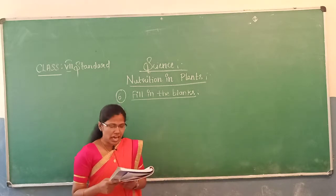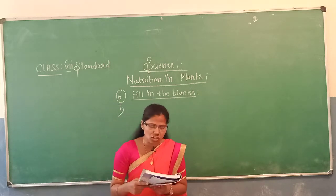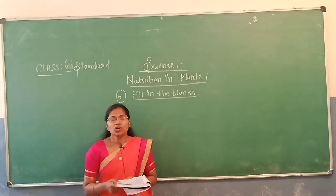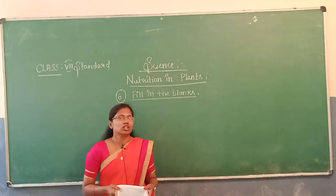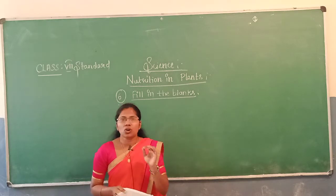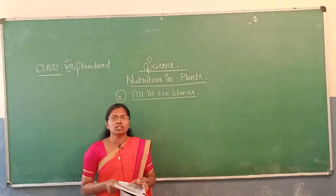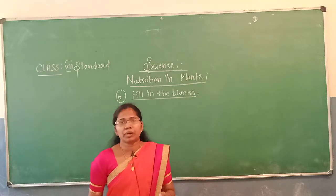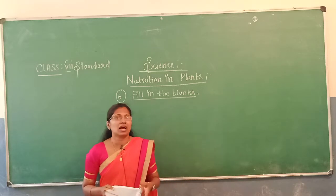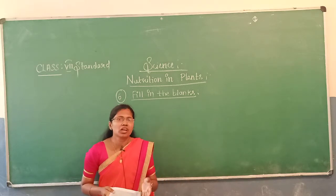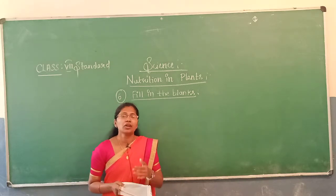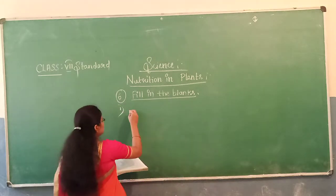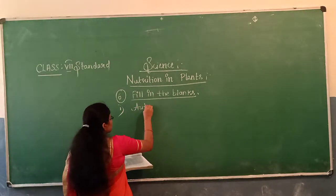The first question: green plants are called dash since they synthesize their own food. In the mode of nutrition I told that autotrophs are the group of organisms which can prepare their own food. Plants are an example of autotrophs because they prepare their own food. So the first answer is autotrophs.